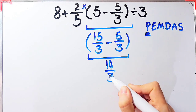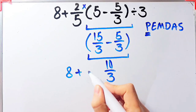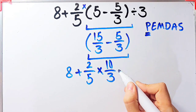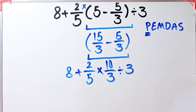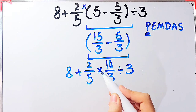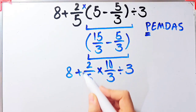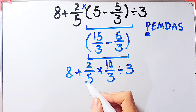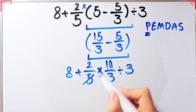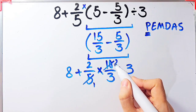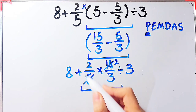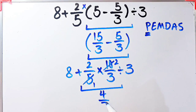Now the question is 8 plus 2 over 5, times 10 over 3, divided by 3. We have addition, multiplication, and division. First we simplify the multiplication. We simplify 10 and 5 by 5, giving us 2 times 2 over 3. 2 times 2 over 3 equals 4 over 3.